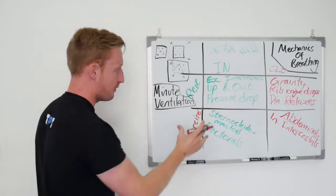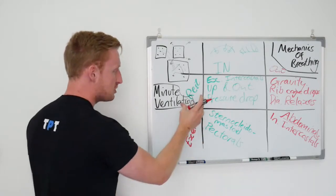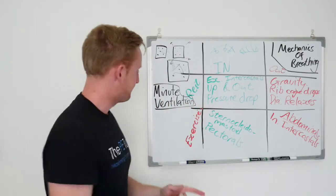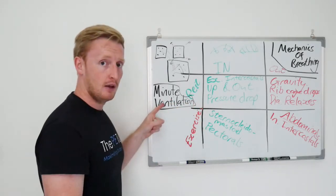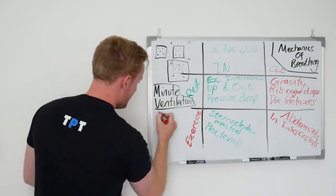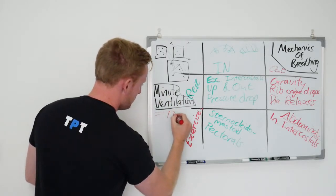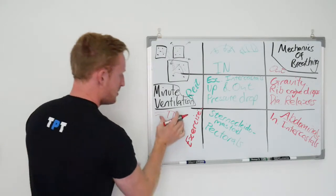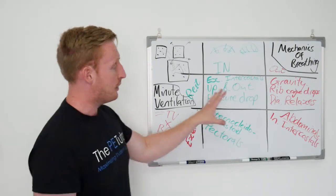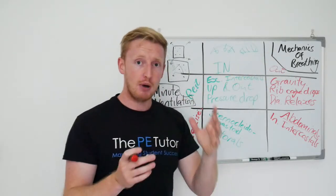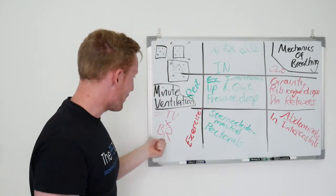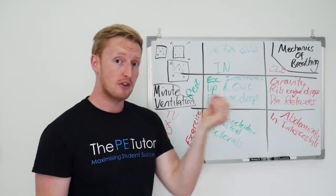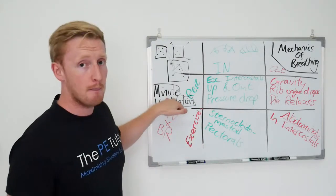Which is our minute ventilation calculation. How much air we breathe in or out per breath, breathing rate, how many times we breathe per minute. Combine the two, minute ventilation.